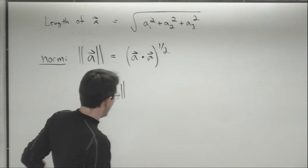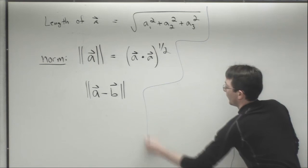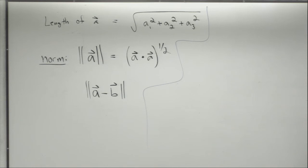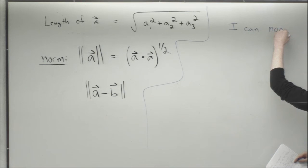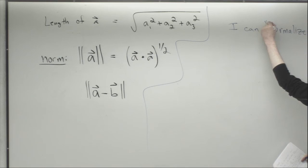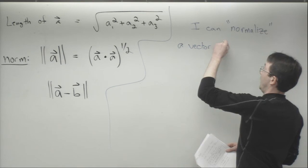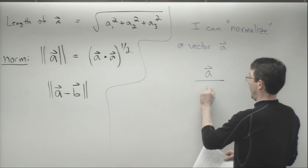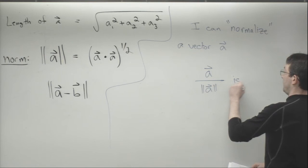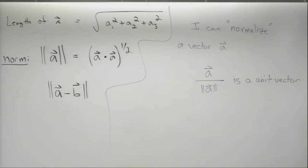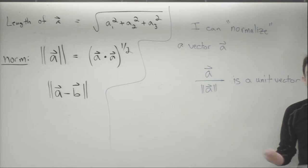One common thing we can do is take a vector that does not have unit length and make it into a vector with unit length — we call this normalization. I can normalize a vector a by dividing by its length: a divided by the norm of a. This gives a unit vector, or a vector with norm equal to one. So norm means length, and unit length means it's a unit vector.